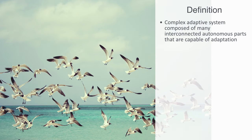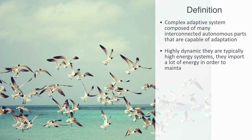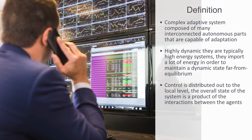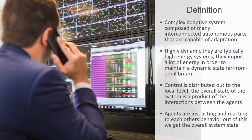Complex adaptive systems are highly dynamic. They are typically high energy systems — they import a lot of energy in order to maintain a dynamic state far from equilibrium. In physics, this is what is called a dissipative system; they import energy and dissipate it to maintain this dynamic non-equilibrium state. Because the components have a high degree of autonomy and are capable of adaptation, control is primarily distributed out to the local level. The overall state of the system is a product of the interactions between agents — like businesses competing in a market, or traders buying and selling within a financial network.